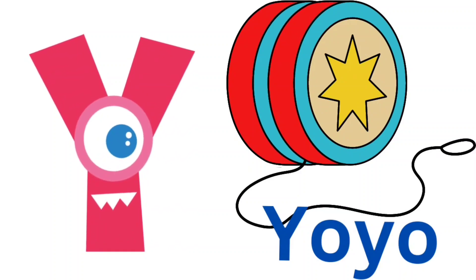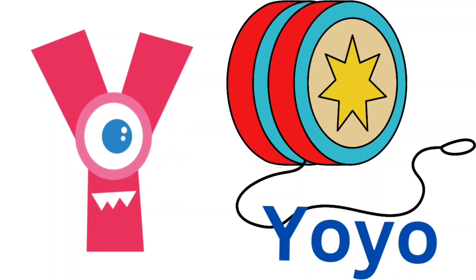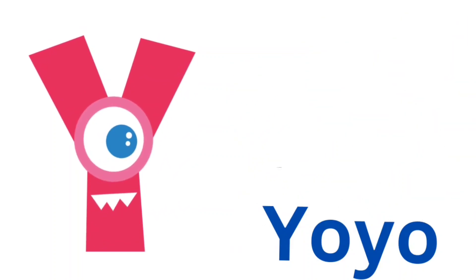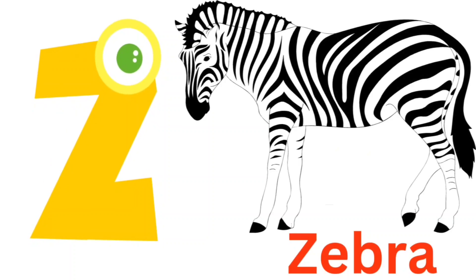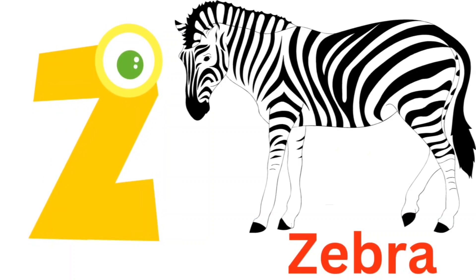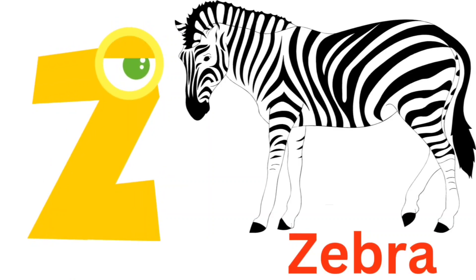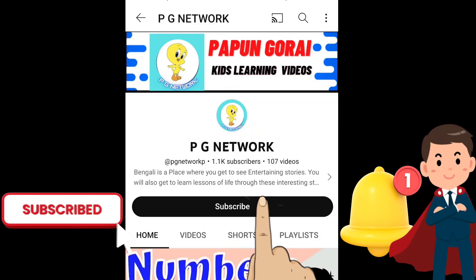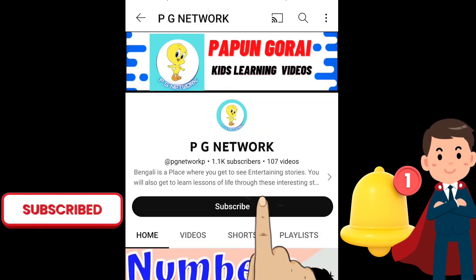Y. Y for yo-yo. Z. Z for zebra. Please subscribe for new videos.